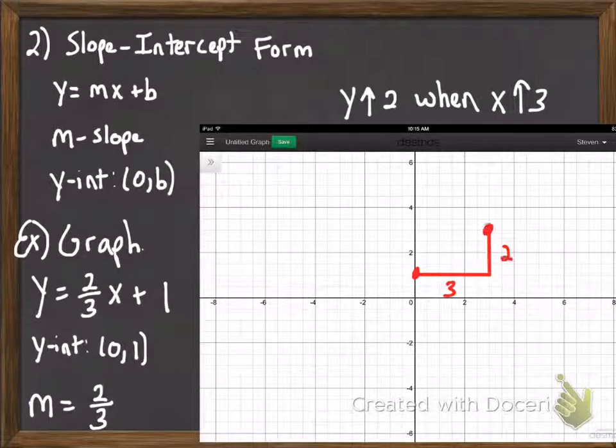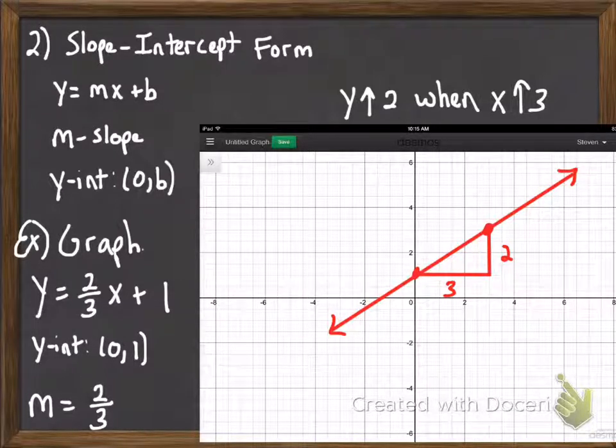And then we just go to our graph, move x over 3, move y up 2, and now we have our second point on our graph. And that's all we need is 2 points, and then we can draw the graph of our equation.